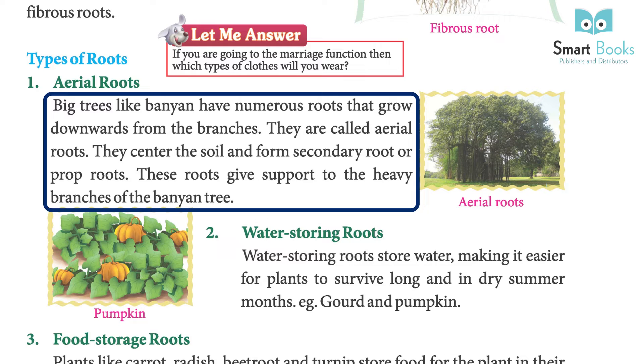Types of roots — one: aerial roots. Big trees like banyan have numerous roots that grow downwards from the branches. They are called aerial roots. They enter the soil and form secondary roots, also called prop roots. These roots give support to the heavy branches of the banyan tree.